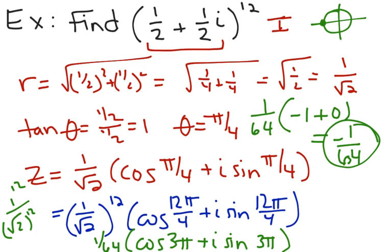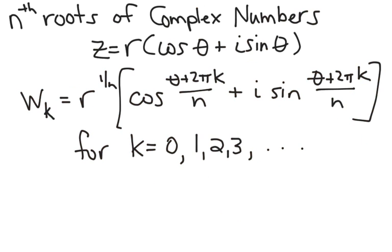You won't always get an answer that simplifies to a plain number — sometimes you'll have to leave it in polar form, but if you can simplify it, you should try. Now, what if instead of raising a complex number to an exponent, you want to take a radical of it? For a complex number in polar form, to take the nth root, you take the nth root of the modulus, and for the angle you add 2πk and divide everything by n.